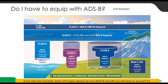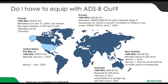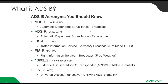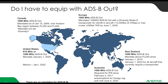Even with the mandate, there will nearly always be a non-ADS-B aircraft you have to account for. Internationally, Europe has a mandate for 1090. All ADS-B out internationally is on 1090 megahertz. In Europe, they require a diversity Mode S transponder — diversity meaning a top and a bottom antenna. Any aircraft retrofitting above 12,500 pounds or faster than 250 knots must comply with the diversity Mode S ADS-B out requirement.